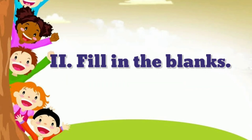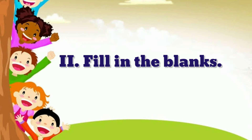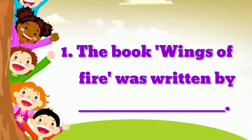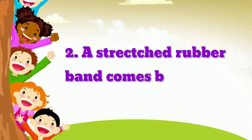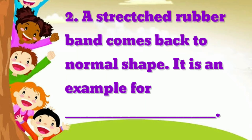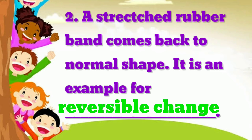Roman numeral 2, fill in the blanks. First question: the book Wings of Fire was written by dash. Yes, our former president, Dr. APJ Abdul Kalam. Question number 2: a stretched rubber band comes back to normal shape — it is an example for dash. This process can be reversed, so we can write in the blanks: reversible change.